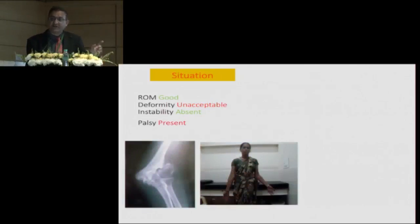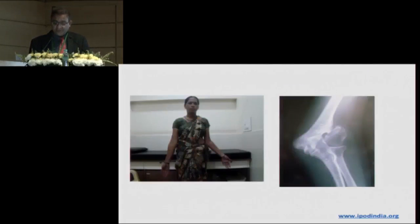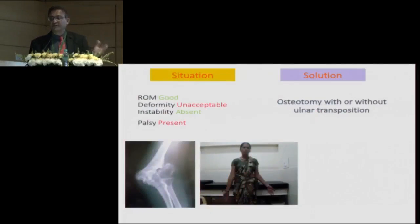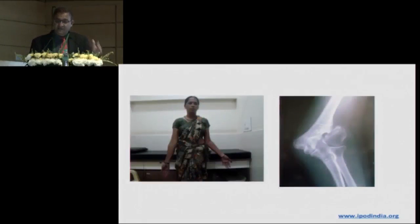The second type is where you have deformity and tardy ulnar nerve palsy. This comes much later — after 10, 20, or 30 years. This patient presented at 42 years of age. Here, ulnar transposition alone will not work because that's not the only problem. We have to do an osteotomy to correct the deformity, and at the same time perform an ulnar transposition to address the ulnar palsy.